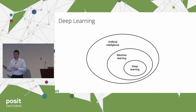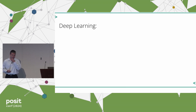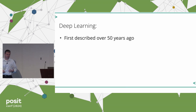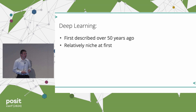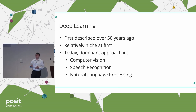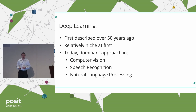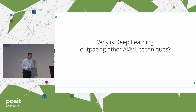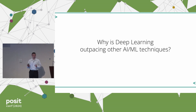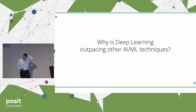Deep learning is just one kind of machine learning, which is just one approach to building an AI system. And deep learning is not new — it's been around for over 50 years. For most of that time it was relatively niche, but today it's the dominant approach in computer vision, speech recognition, and now with LLMs, natural language processing. It's worthwhile to pause and ask why deep learning seems to be outpacing other ML techniques.